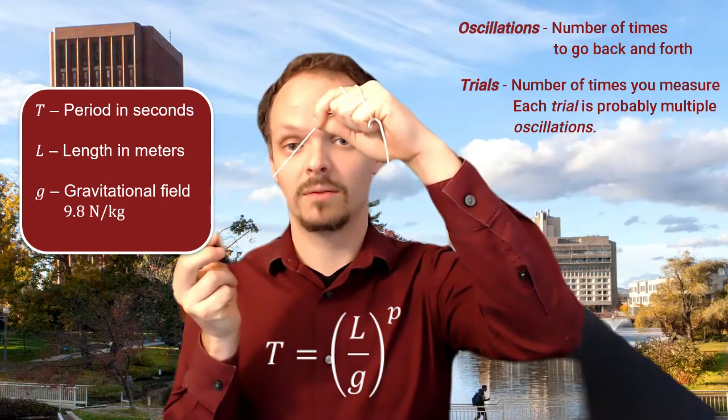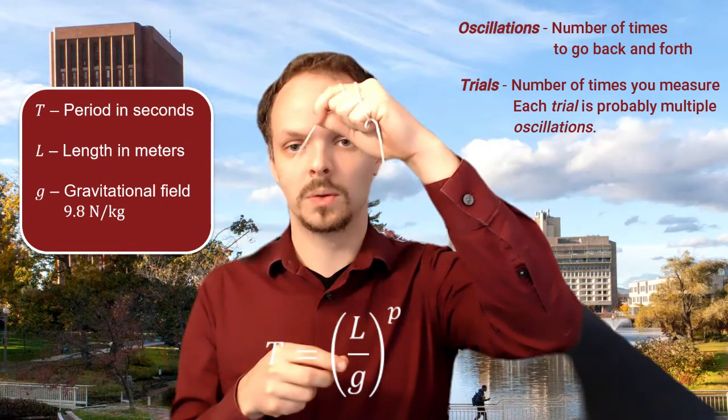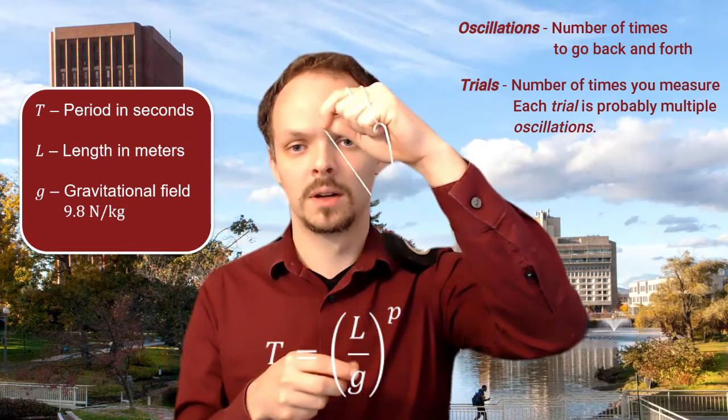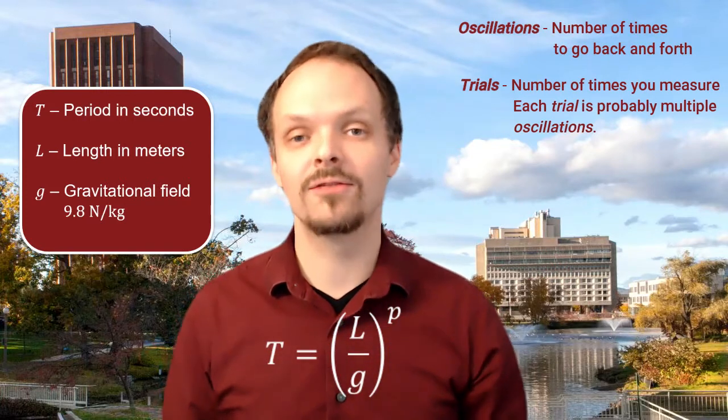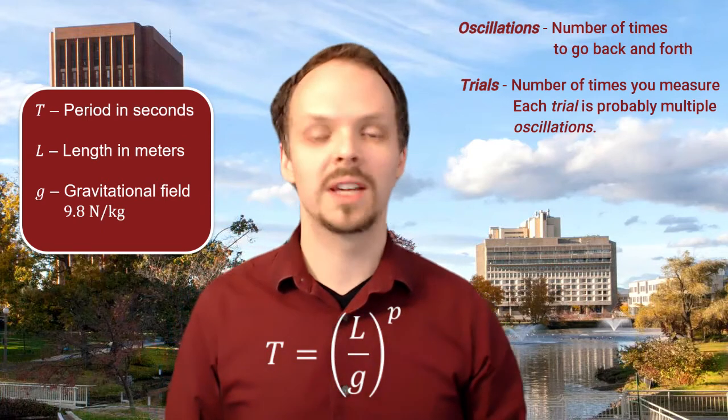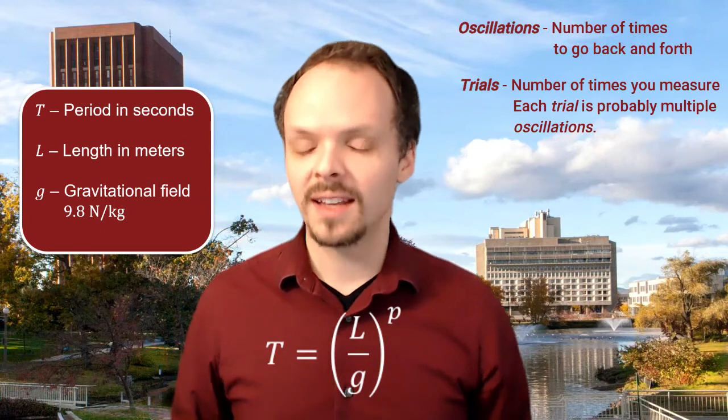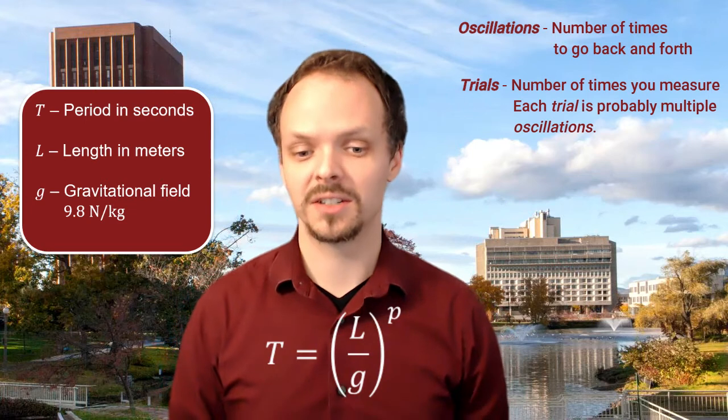And then for a third trial: 1, 2, 3, 4, 5. So you've now done three trials of five oscillations each. From there, you can get a mean and a standard deviation, starting to get a handle on your statistical uncertainties.